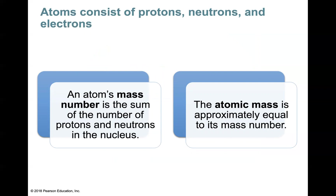The atomic number is the number of protons in the nucleus. We also have the atomic mass, which is the sum of the number of protons and neutrons in the nucleus — approximately equal to its mass number. If we're looking at the periodic table, the atomic mass is typically a number containing a decimal, whereas the atomic number is usually a whole number representing the total number of protons in the atom.